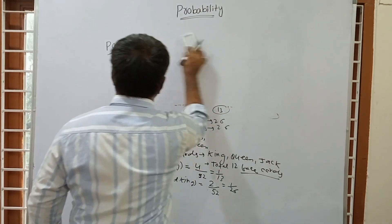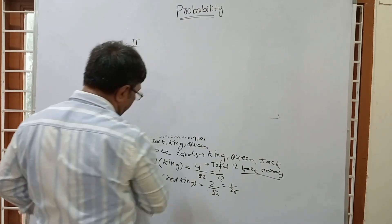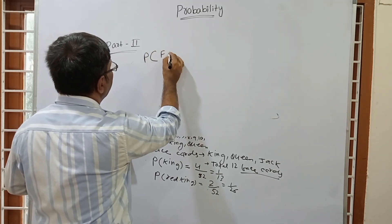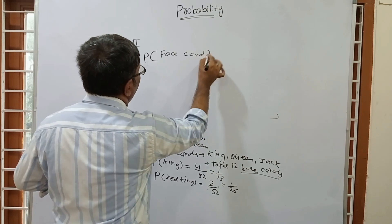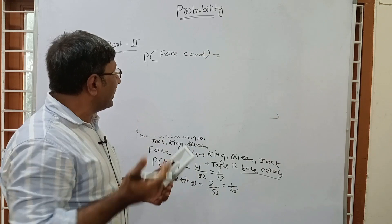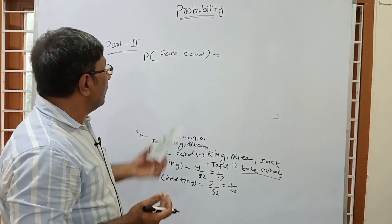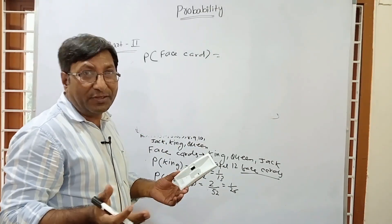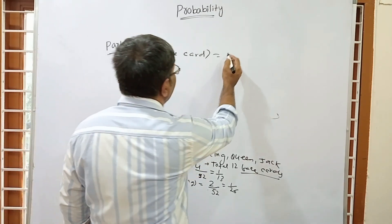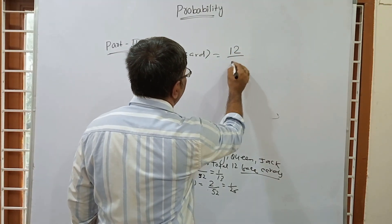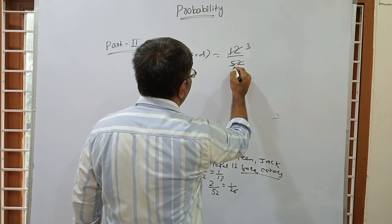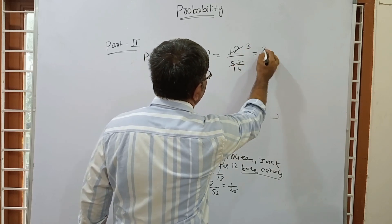If the question is: what is the probability of drawing a face card from a pack of 52 cards? The total number of face cards is 12, so the probability = 12/52 = 3/13.